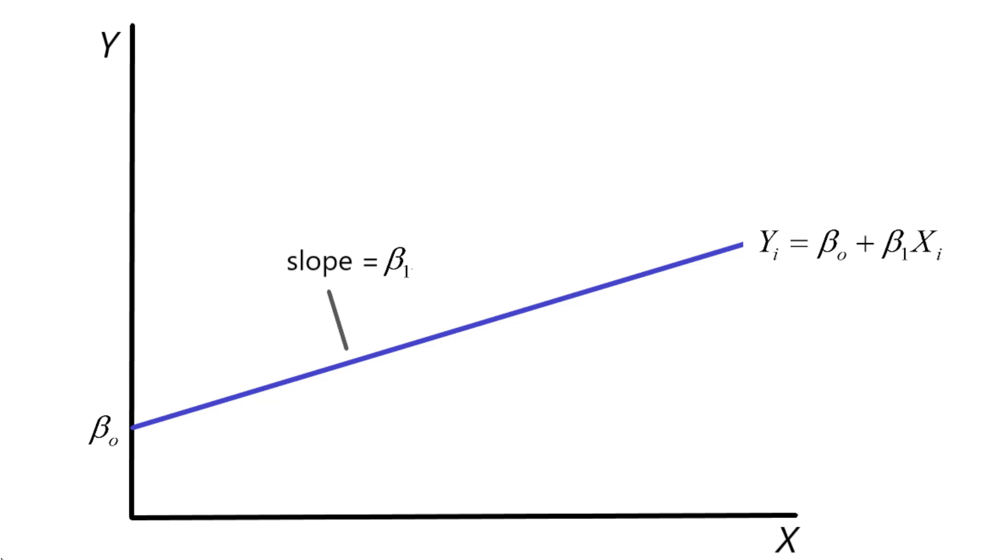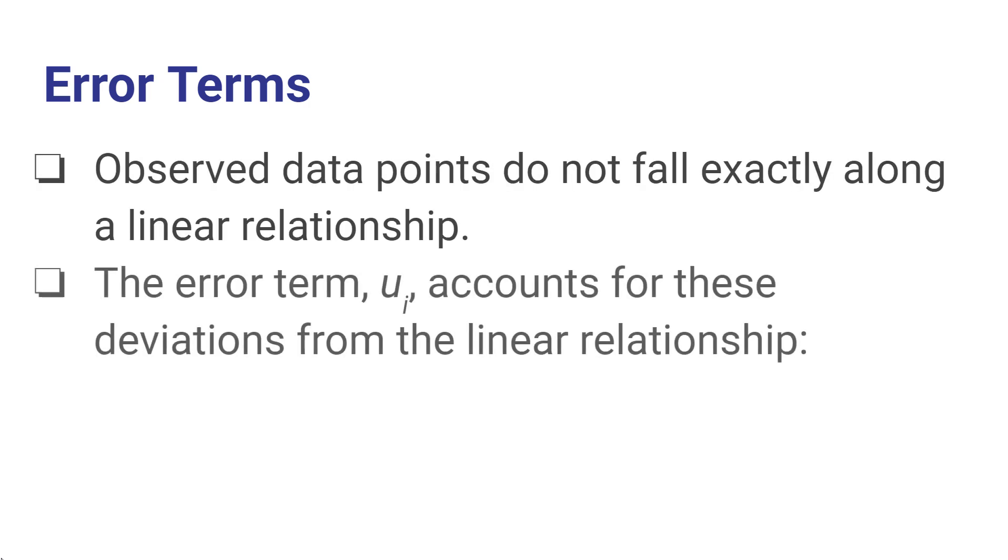It would be really nice if all our data points fell exactly on this line. But when we gather data, it's not likely they're all going to fit some sort of linear relationship exactly. And that's why we introduce error terms into the equation. And that error term, which we're going to label uᵢ, accounts for deviations between what we observe and what this linear relationship captures. So we can write the equation now with this error term as the observed y, yᵢ, for each observation is equal to β₀, the intercept, plus β₁, the slope times x, plus uᵢ. So uᵢ captures that part of the y that we observe that can't be explained by knowing the level of x. So the error term represents the unexplained component of y.